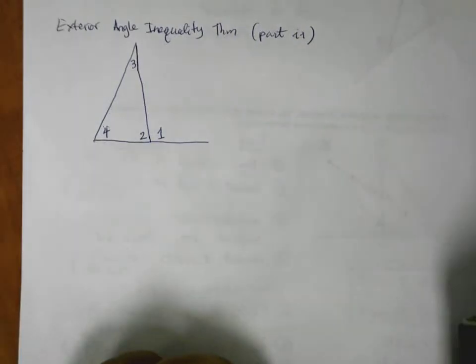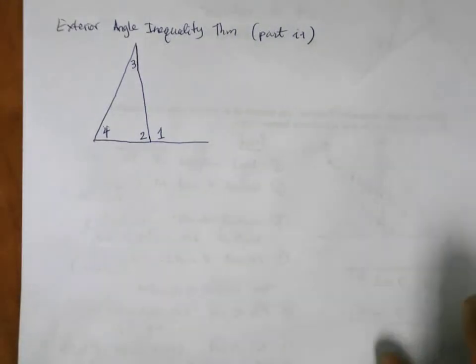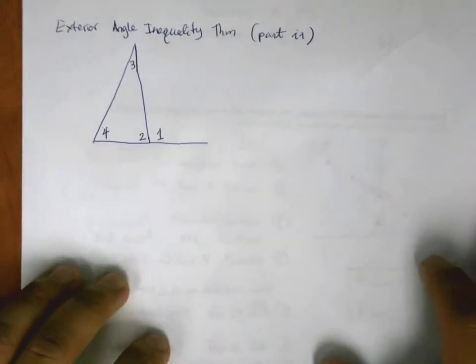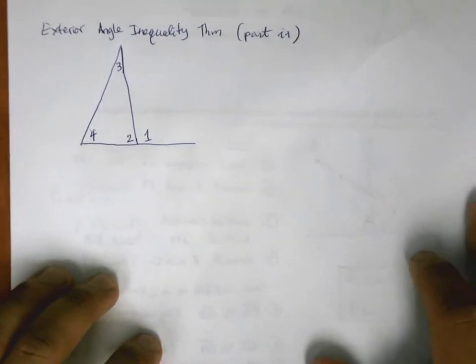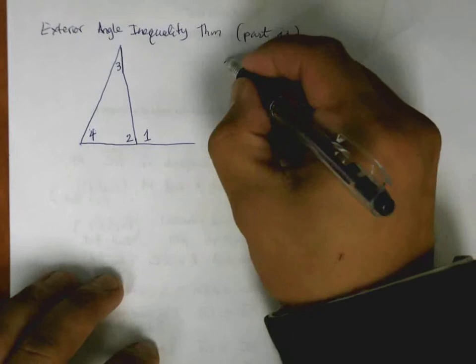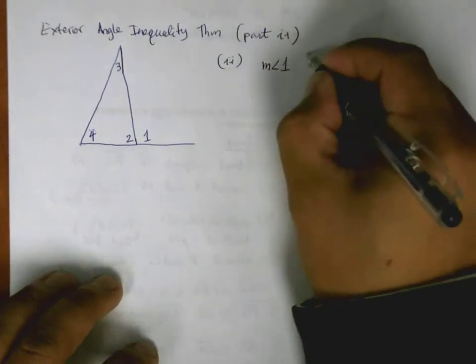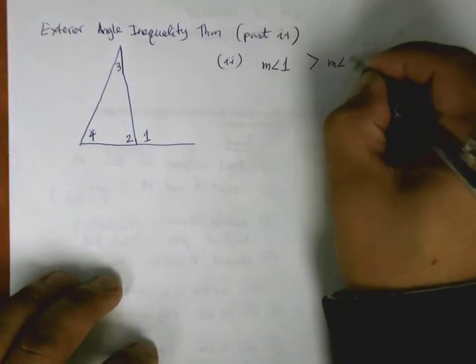Hello geometry students and welcome to the second part of the proof of the exterior angle inequality theorem. What I'd like to prove in this part is part 2, which says that the measure of angle 1 is greater than the measure of angle 4.